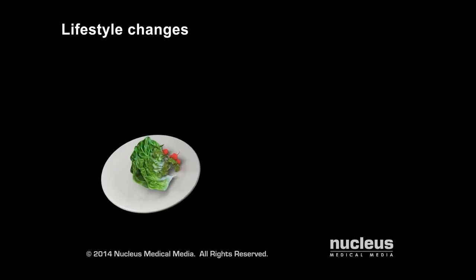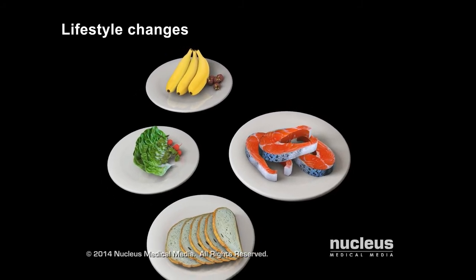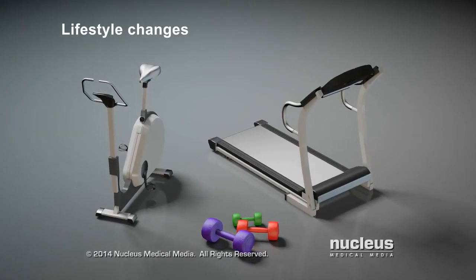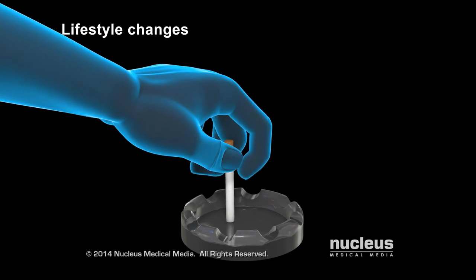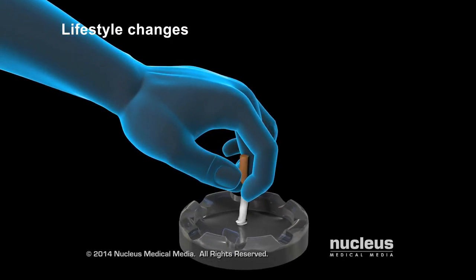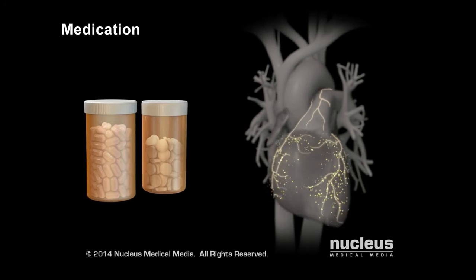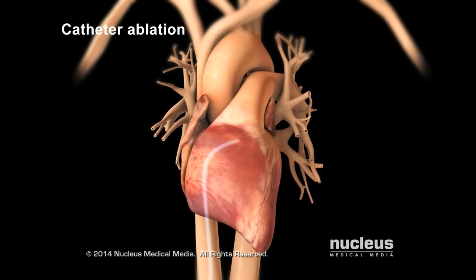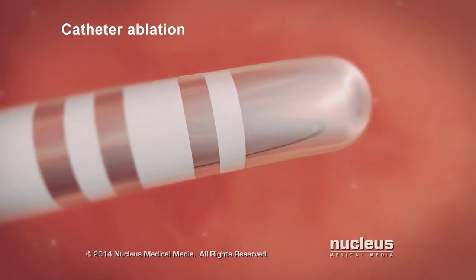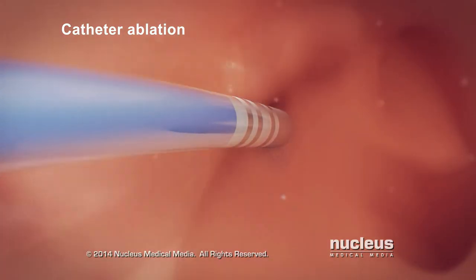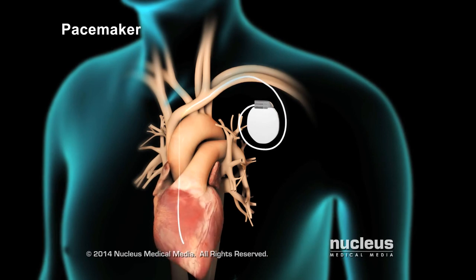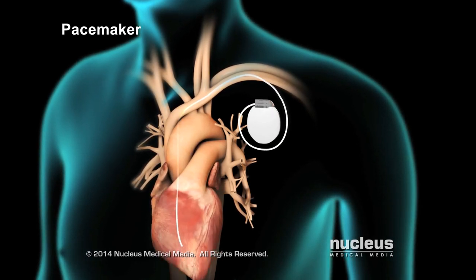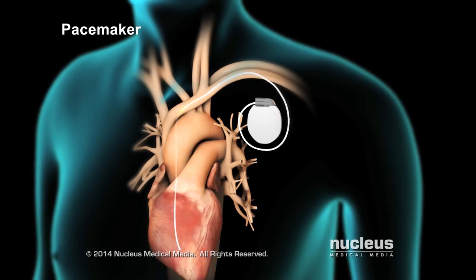Depending on the type of arrhythmia, a doctor may recommend one or more of the following treatments: lifestyle changes such as eating a heart-healthy diet, exercising, and quitting smoking; medication such as antiarrhythmic drugs and beta-blockers; catheter ablation, where thin wires inserted into the heart destroy the tissue causing the arrhythmia with hot or cold energy; and implantable devices such as a pacemaker or defibrillator to correct the pace or rhythm of the heart.